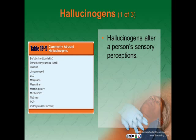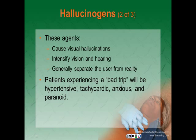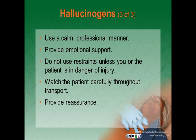Hallucinogens alter a person's sensory perceptions. The classic is lysergic acid diethylamide (LSD). Phencyclidine (PCP), a dissociative anesthetic that is easily synthesized and highly potent, was common in the 1960s and 70s but is relatively uncommon among young adults today. These agents cause visual hallucinations, intensify vision and hearing, and separate the user from reality. Patients experiencing a bad trip will be hypersensitive, tachycardic, anxious, and paranoid. Care is the same as for a sympathomimetic patient — be calm and professional, provide emotional support, do not use restraints unless there is danger of injury, watch the patient carefully, and request ALS assistance.